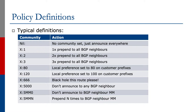Community 5000 means do not announce this to any BGP peer. Then we have the 5mmn community format, which we're going to look at in the next couple of slides.